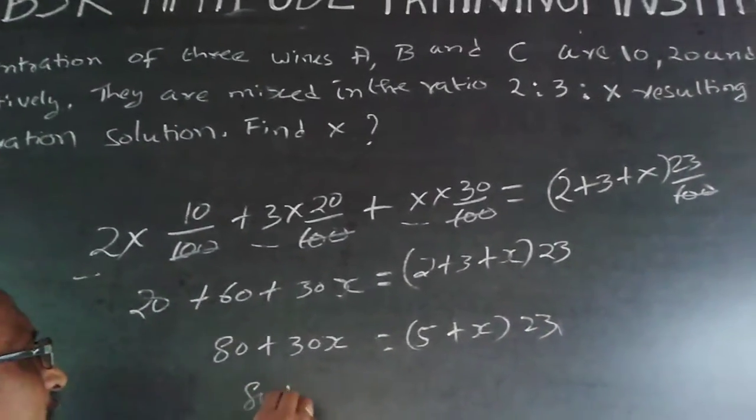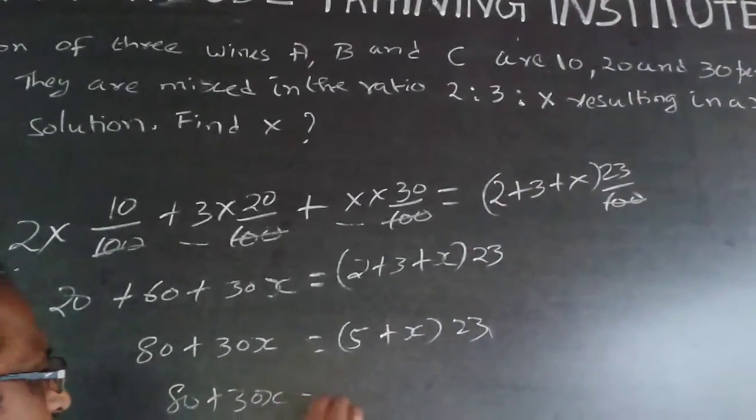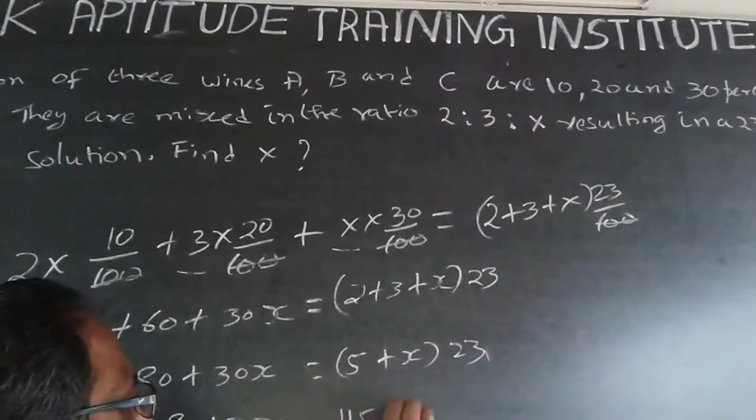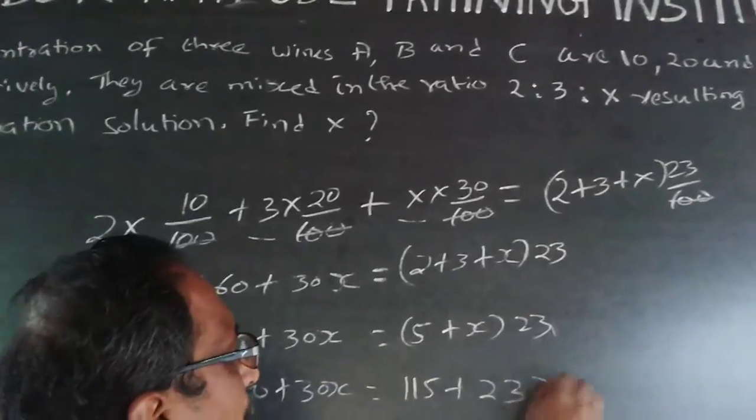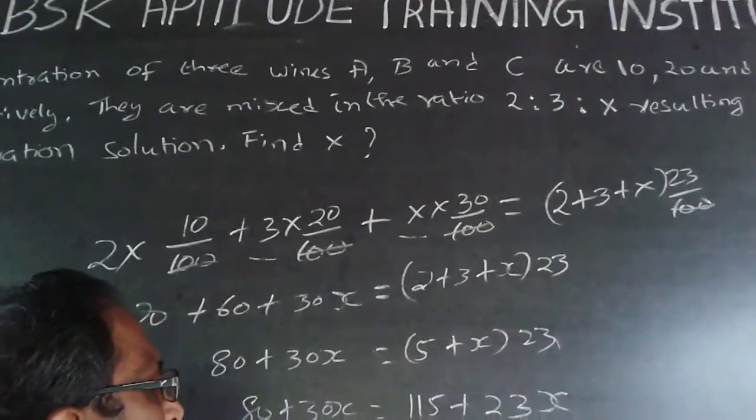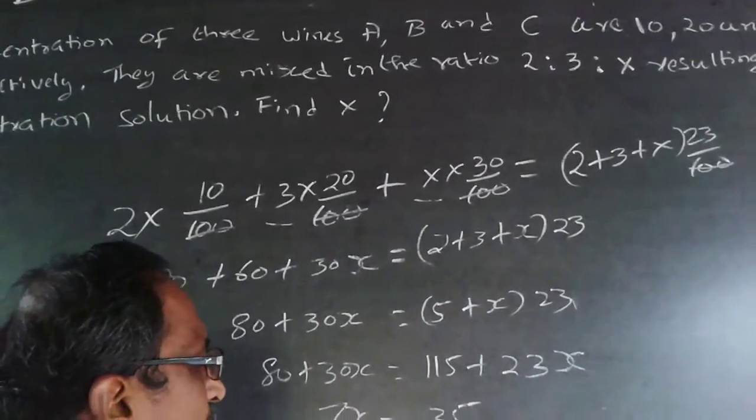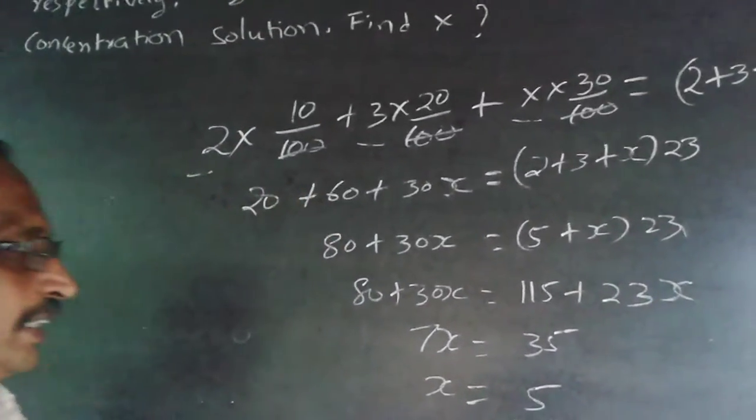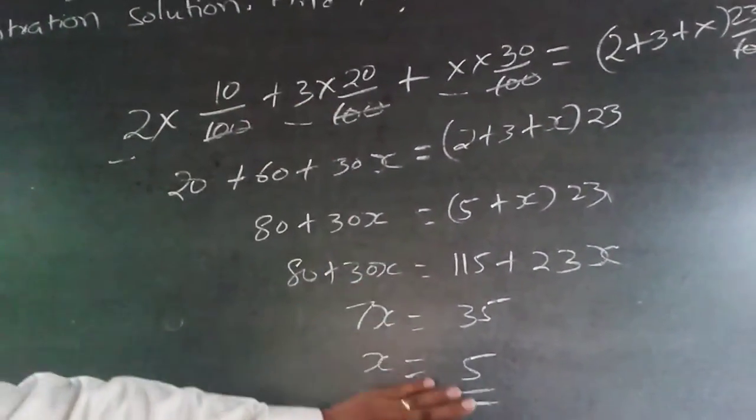Or 80+30x will be equal to 115+23x. Now bring this x here: 7x will be equal to 35, or x will be equal to 5. So the answer is 5, working it out you will get x as 5.